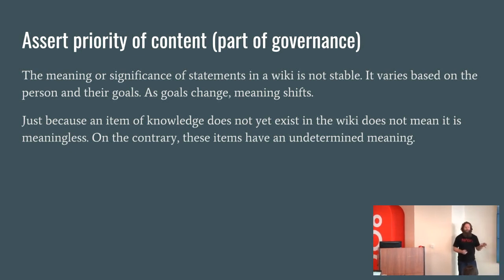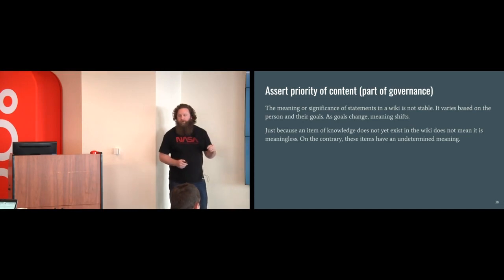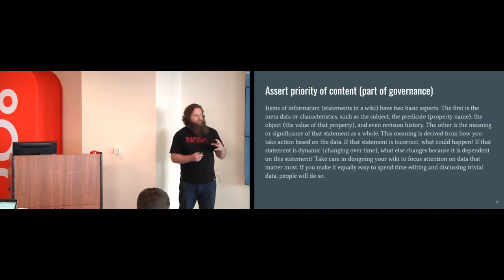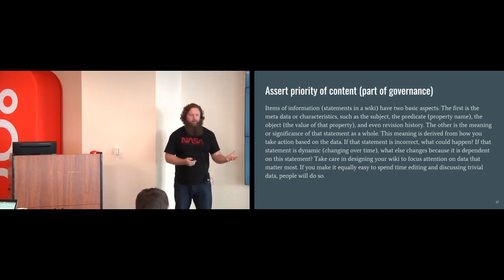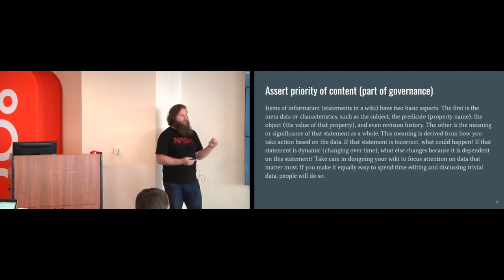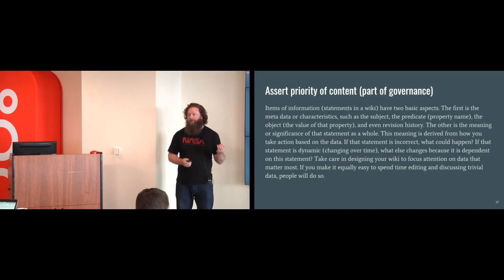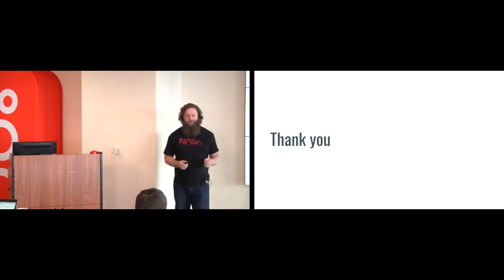Just because you might be missing some pieces of data in your wiki — even if you've identified them — doesn't mean those unknown values are meaningless. Items of information in a wiki have the metadata of what the property is, but also there's the question of how important is that piece of information to you — what are you going to do with it, what's your action out of that? Alright, I've got two minutes for questions.